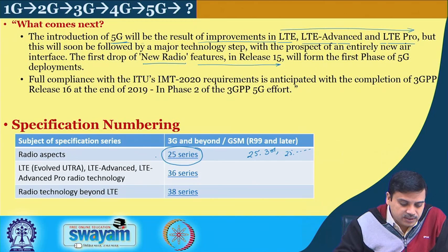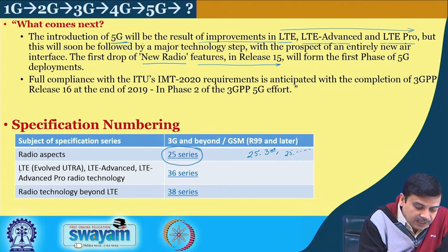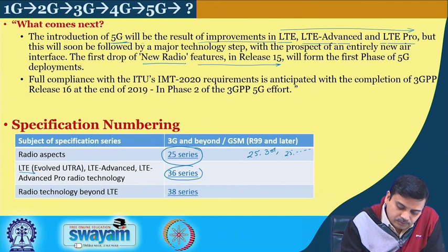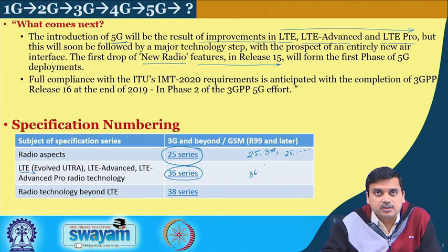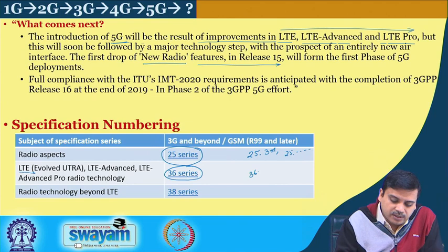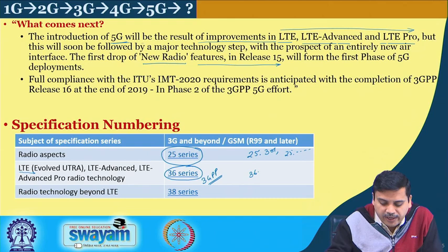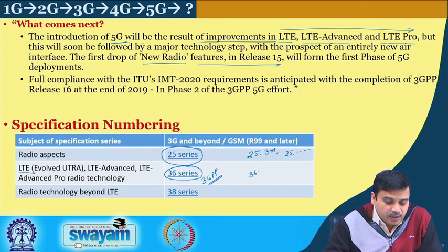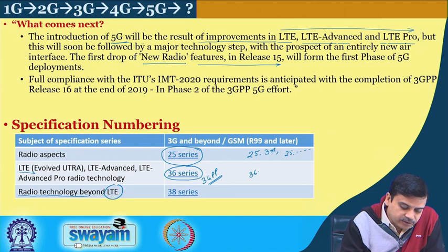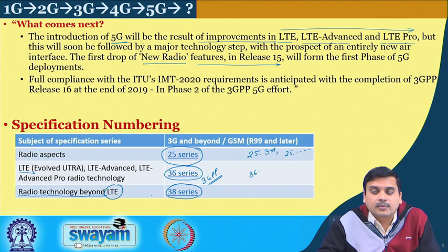For LTE we have the 36-series of documents — 36.201, 36.104, 36.101 and several others. Opening the 36-series documents in 3GPP you will find a whole set describing the entire operation of the network. When we go beyond LTE, especially for radio technology beyond LTE, we look at the 38-series of documents. All of these are from the 3GPP website, and if you go there you will get the detailed specifications.